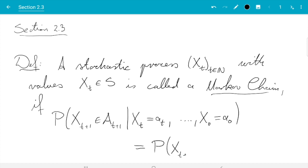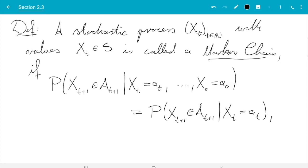the conditional probability of P(Xt+1 ∈ At+1 | Xt = at), so if this condition holds for all a0 up to at in S, At+1 subset of S, and all t element N. I see I made a small mistake - t starts at 0 so I need to write N0 up here.